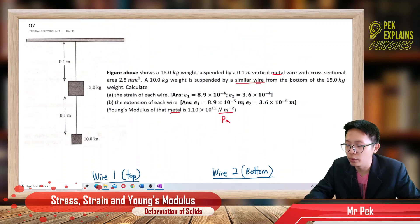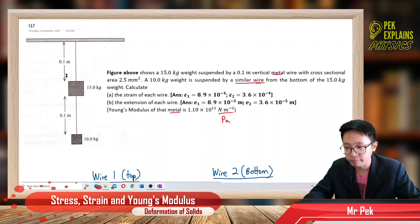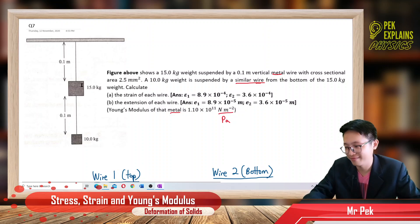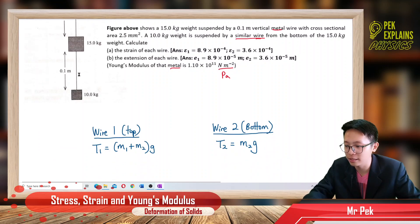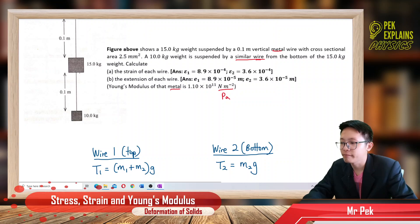Now, first of all, we want to find strain. Strain is related to elongation, but before finding elongation we must first find what is the stress experienced by both wires. The stress will then give us the strain. And to find stress, we must first find the tension — we know there must be a tension acting in each wire.